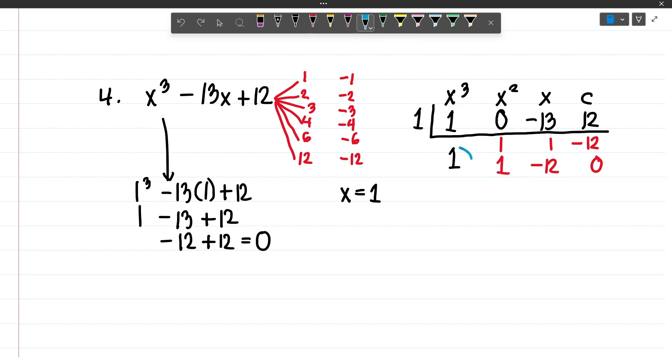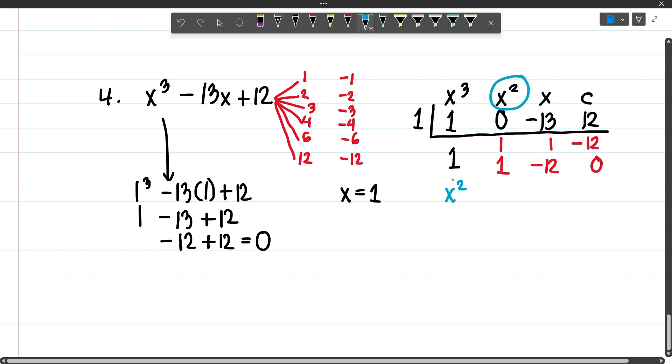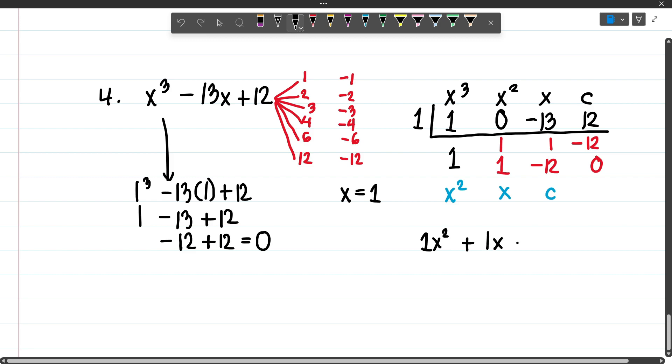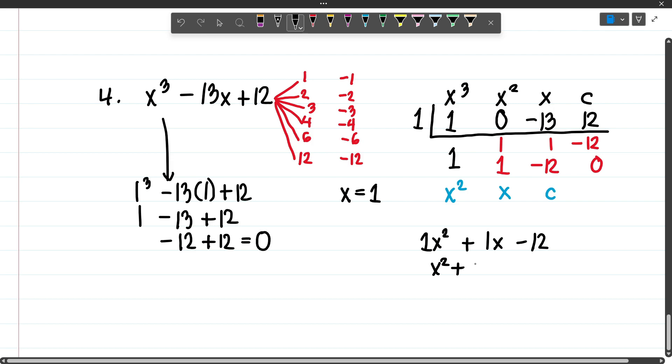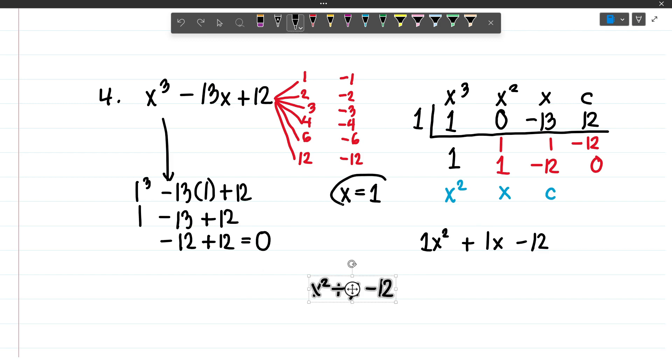The next step is to pair these values with 1 degree lower. So 1 degree less of x cubed is x squared, 1 degree less of x squared is x, and 1 degree less of x will simply become your constant. Pairing these, you will have 1x squared plus 1x minus 12, or simply x squared plus x minus 12. So your factors will be setting this to 0.